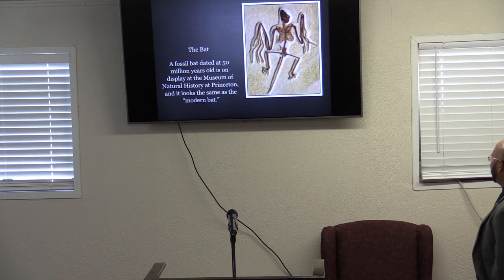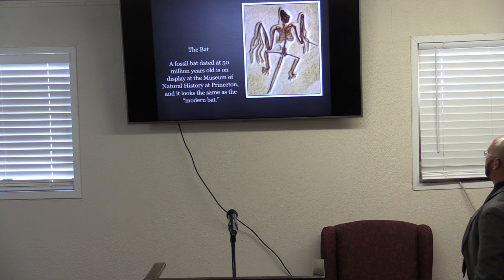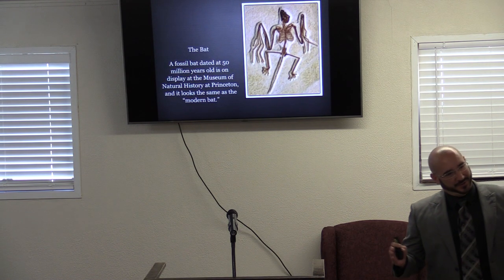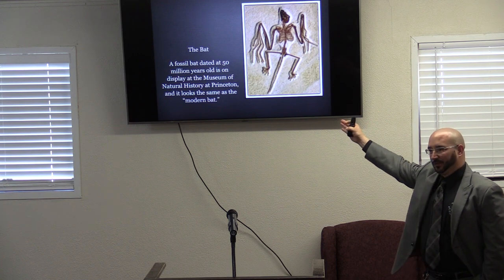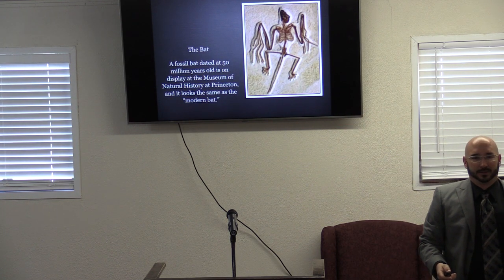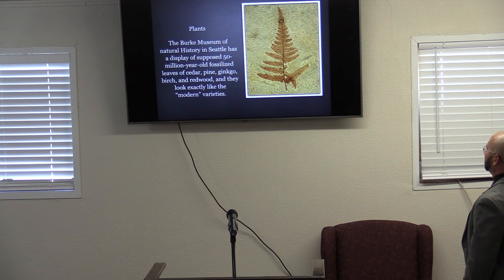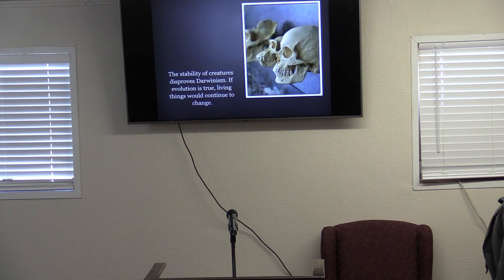A fossil bat dated at 50 million years old is on display at the Museum of Natural History at Princeton, and it looks the same as the modern bat. There's been no change in 50 million years — yet evolution claims all this change is taking place. The Burke Museum of Natural History in Seattle has a display of supposed 50 million year old fossilized leaves of cedar, pine, ginkgo, birch, and redwood — and they look exactly like the modern varieties. There's been no change. The stability of creatures disproves Darwinism.